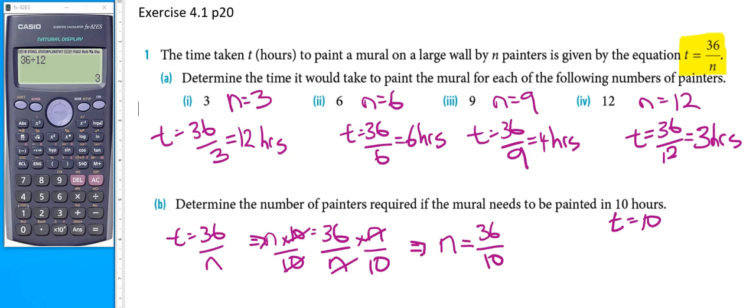When we go to our calculator, 36 divided by 10 equals 3.6.